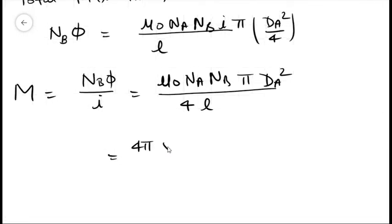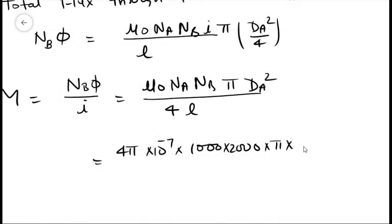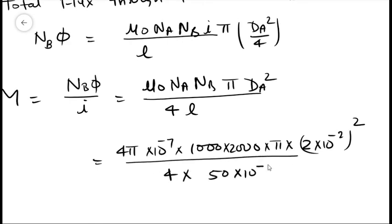We will get 4π × 10⁻⁷ × 1000 × 2000 × π × DA. DA is the diameter of the inner solenoid, which is 2 cm, that is 2 × 10⁻² to the whole square, divided by 4 × 50 cm, that is 50 × 10⁻². And if you solve this, you will get 15.791 × 10⁻⁴.